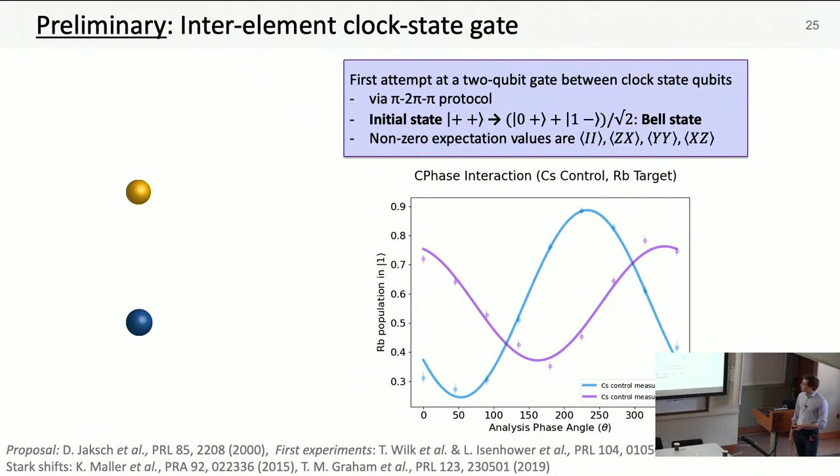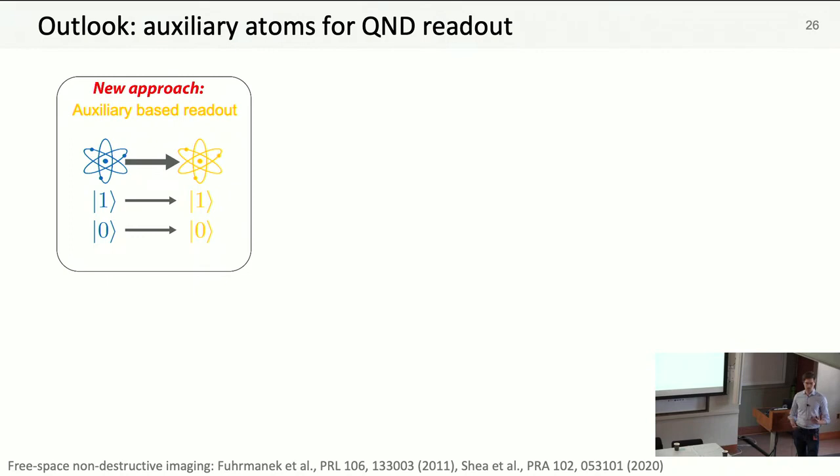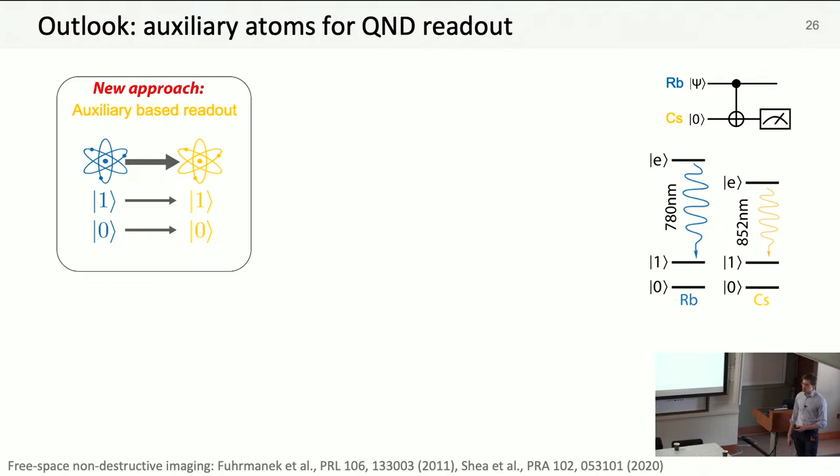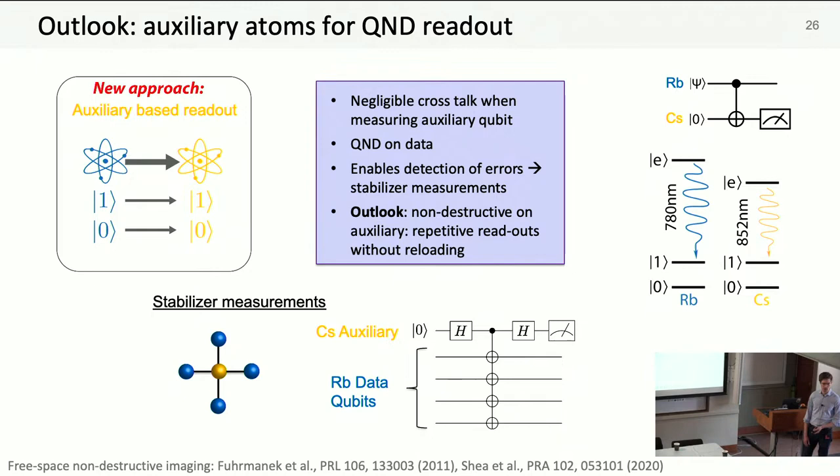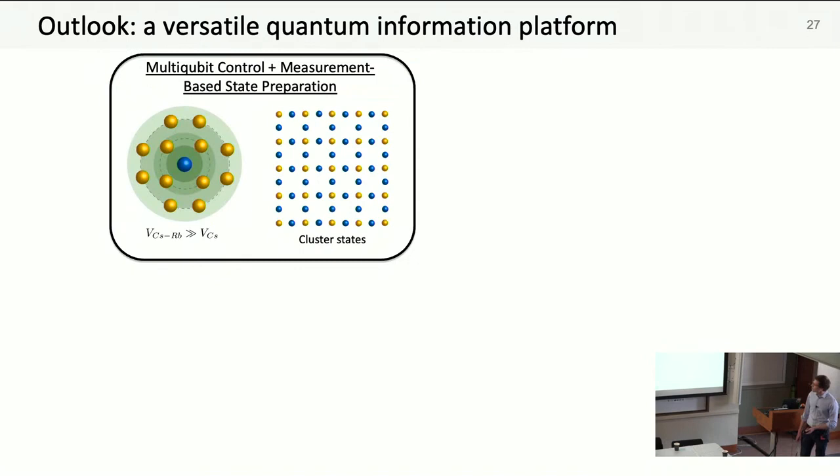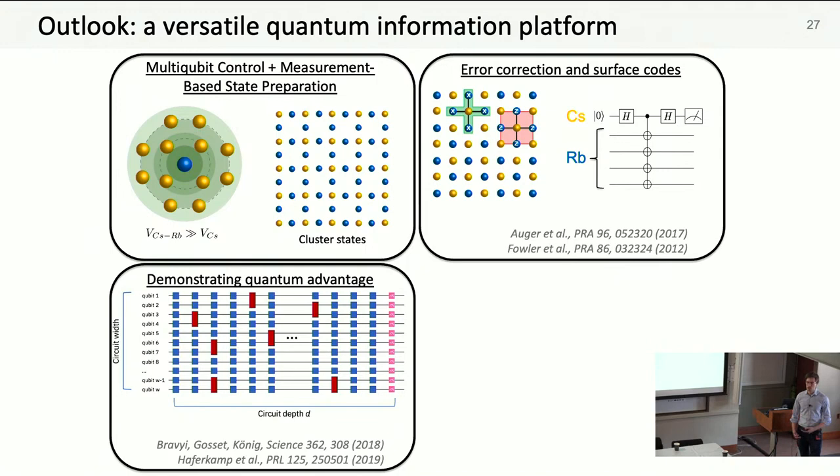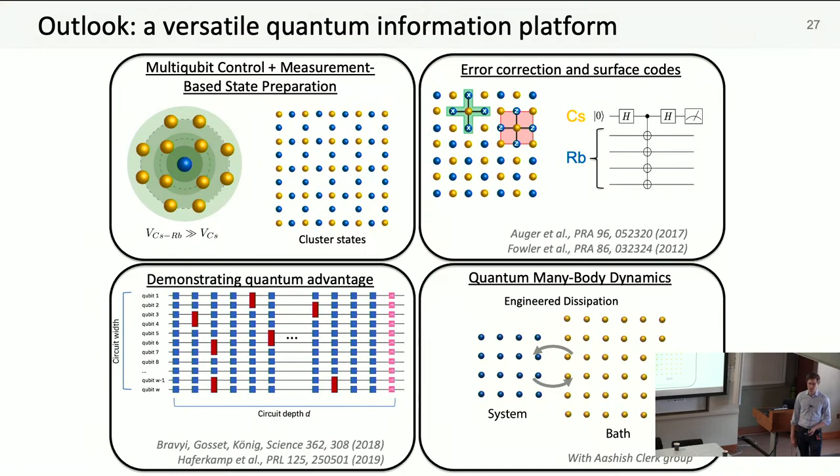I'll wrap up. The key message is that mid-circuit operations come very naturally in this system, and combining this with two qubit gates naturally leads to quantum non-demolition measurement through entanglement. Working towards stabilizer measurements is a really obvious goal for us. But there's a lot of other exciting things to look at in this platform: efficient ways to generate large multi qubit states like GHZ and cluster states, error correction and surface codes, quantum advantage through things like shallow circuit sampling, and adding dissipation for system bath dynamics. We're really excited for what will follow.